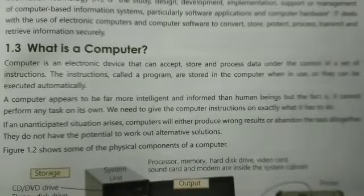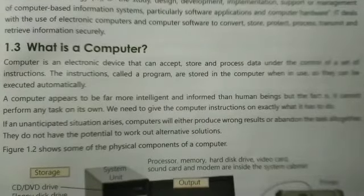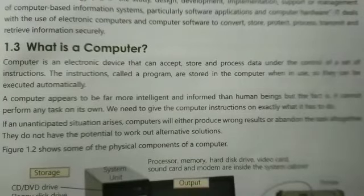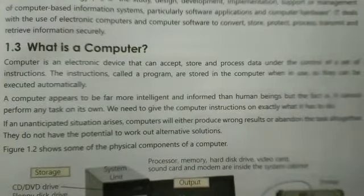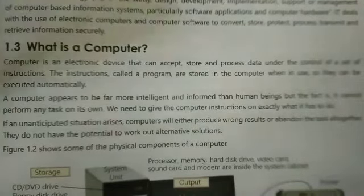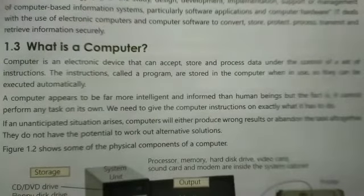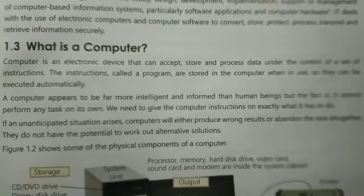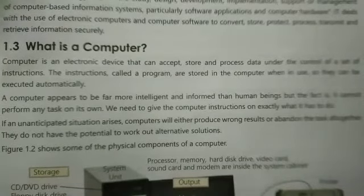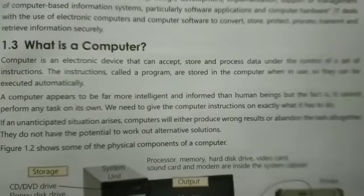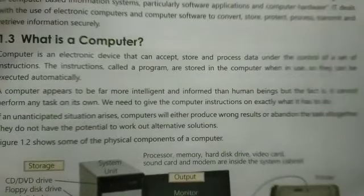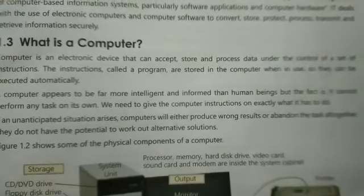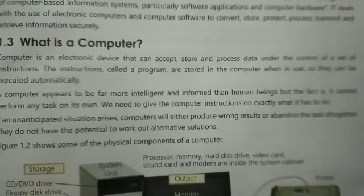What is a computer? Computer is an electronic device that can accept, store, and process data under the control of a set of instructions. Computer ek aisi device hai jo bijli ki madad se chalti hai — yeh aapke data ko accept karti hai, store karti hai, process karke aapko desired result deti hai. The set of instructions given to the computer is called a program. Programs are stored in the computer so they can be executed automatically.